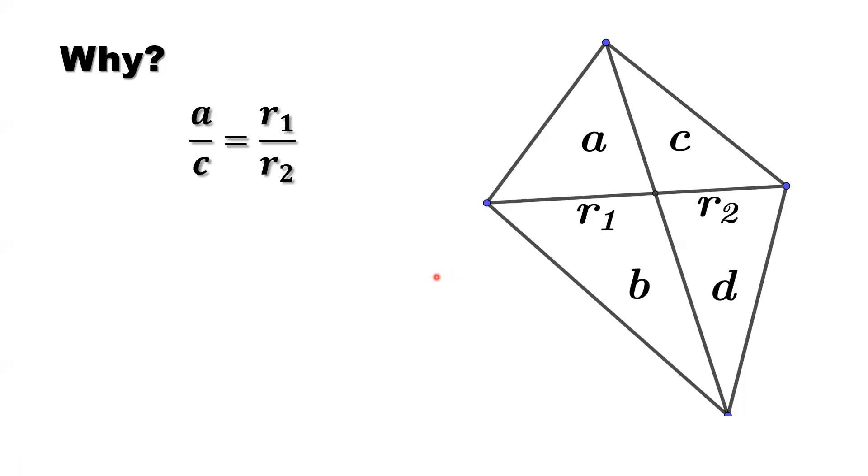So what does this mean? Area a over c. Area of a equals r1 times h. R1 times h in the numerator. Bottom, c is what? R2 times h. H, the height, that's the same, right? So the heights cancel each other. You only have r1 and r2 left: r1 over r2.